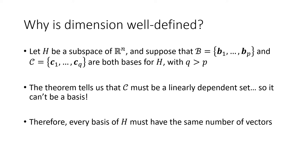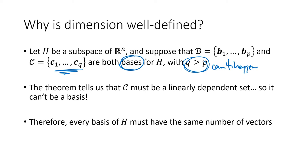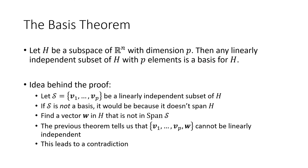How does that help us see why dimension is well-defined? Suppose we had two bases for the same subspace: basis B with p vectors and basis C with q vectors, where q is greater than p. The theorem tells us that C would have to be linearly dependent — but it's supposed to be a basis, which requires linear independence. That contradiction means you can't have two bases with different numbers of vectors, so the notion of dimension is well-defined.